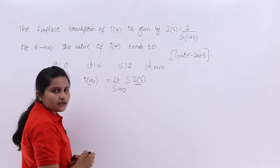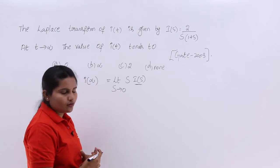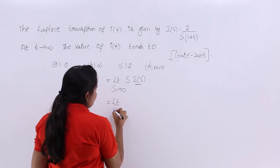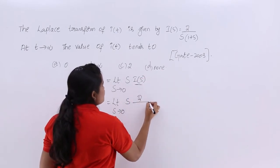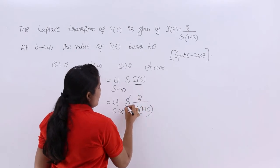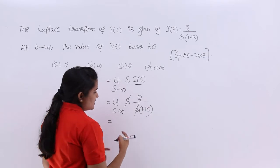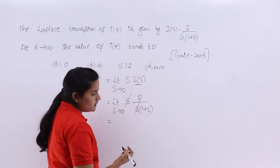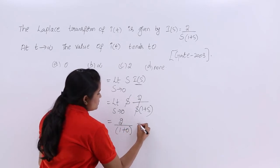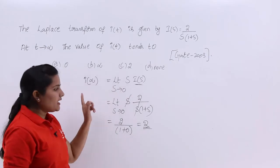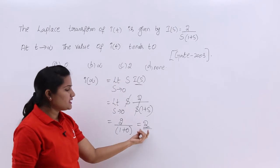We take the spectrum, multiply it by s, and substitute the limit as s tends to 0. Substituting I(s) = 2 / [s(1 + s)], the s in the numerator cancels with the s in the denominator, giving 2 / (1 + s). Substituting s = 0, we get 2 / (1 + 0) = 2. So the final value when I(s) = 2 / [s(1 + s)] is 2.